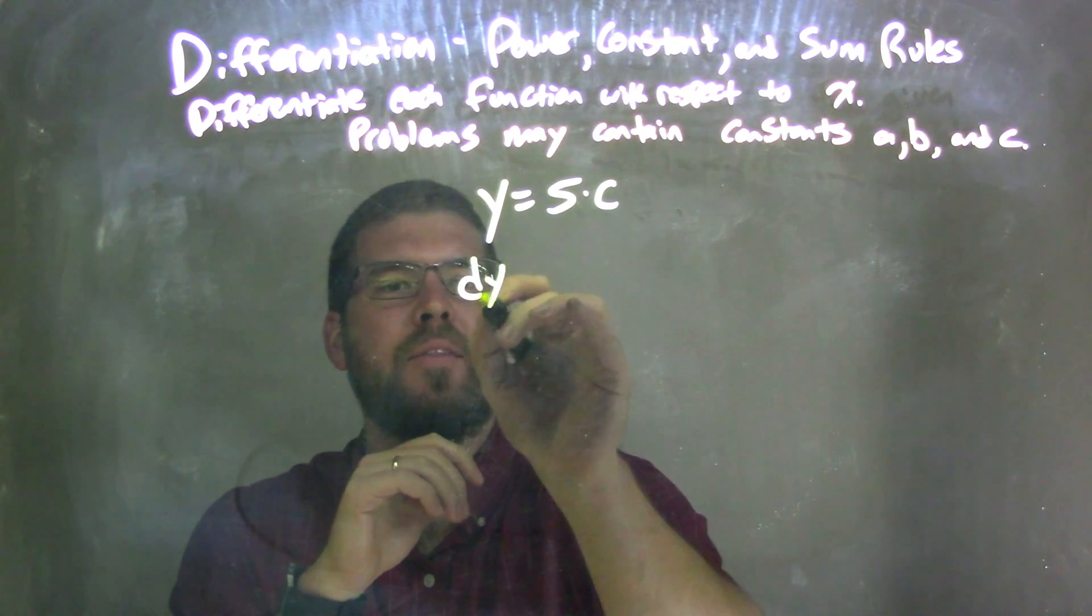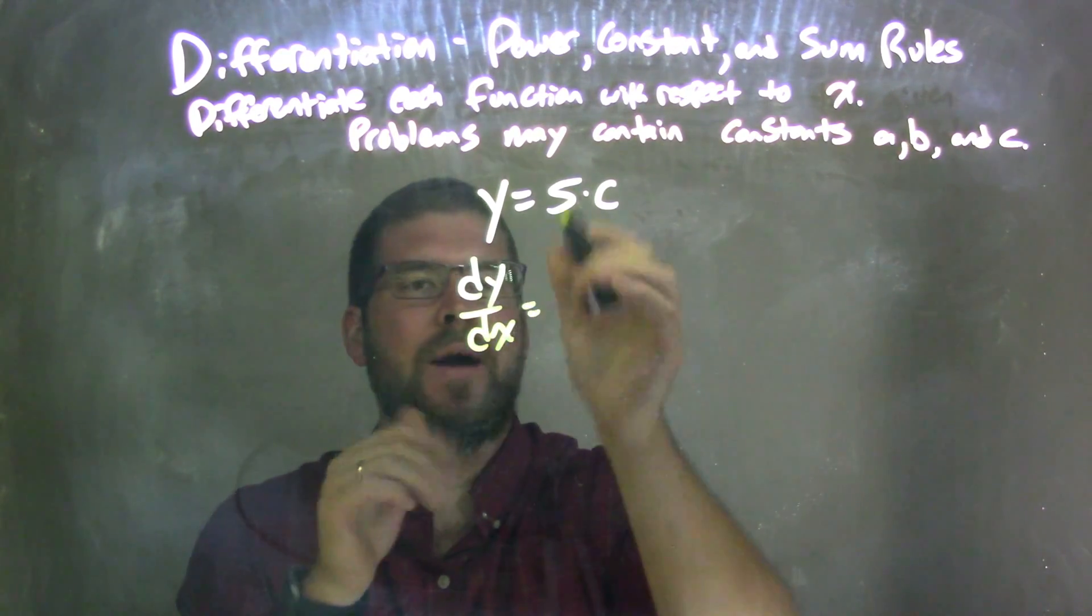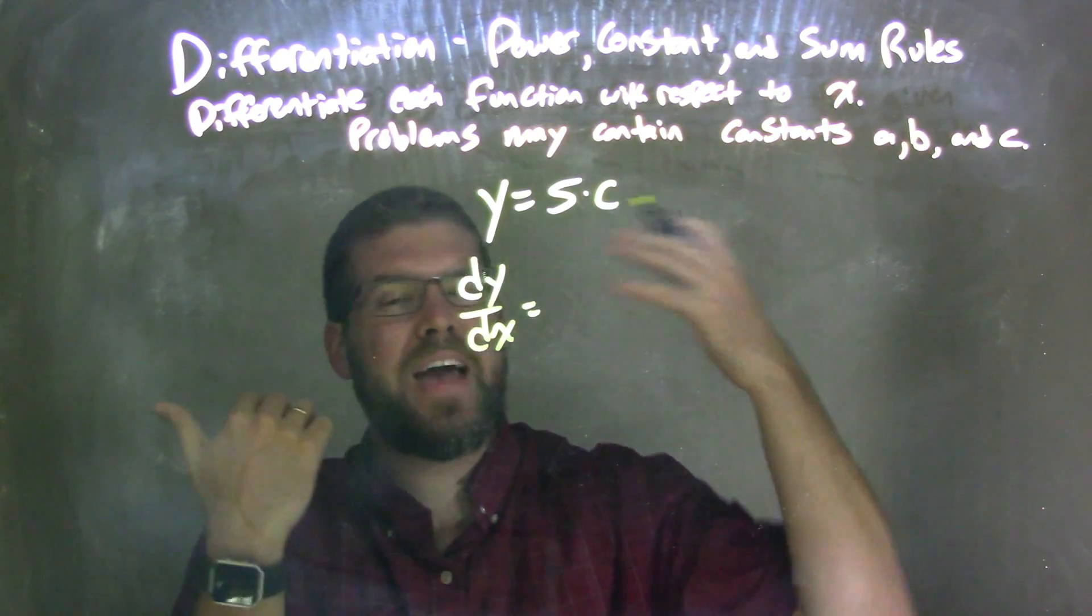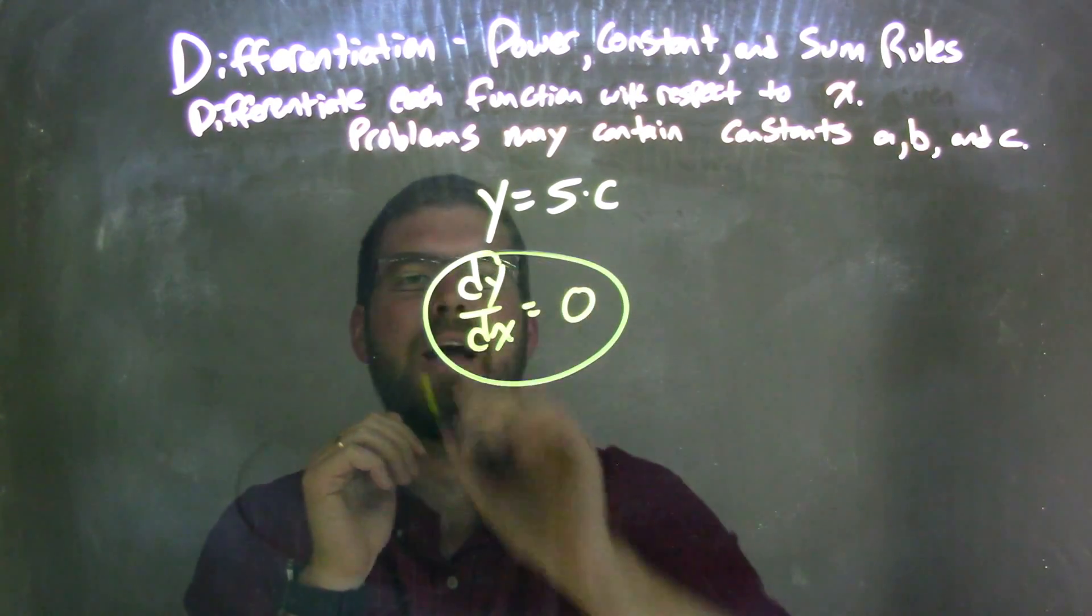And when that is the case, dy/dx here, when I take the derivative, the derivative of any constant is just 0. And there we have our answer.